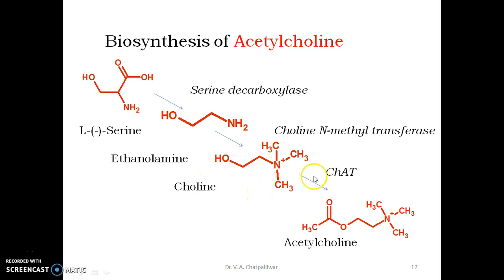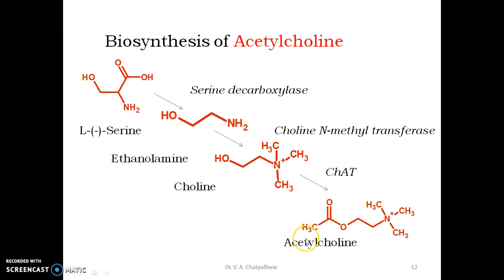Choline is then acted upon by ChAT — choline acetyltransferase enzyme — which transfers an acetyl group from acetyl coenzyme A to the hydroxy part of choline, generating acetylcholine. It is a simple three-step reaction, which results in the release of several thousand molecules of acetylcholine in response to one action potential.